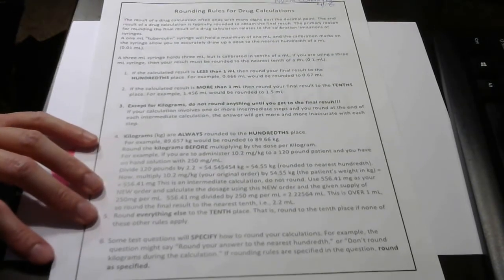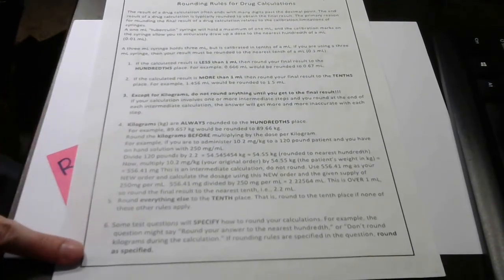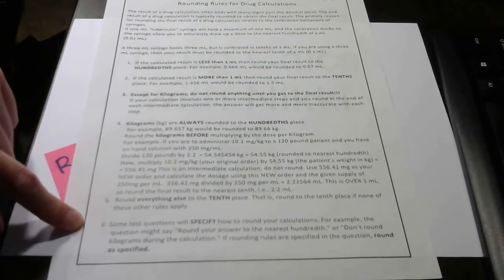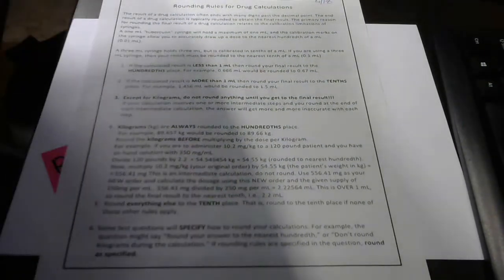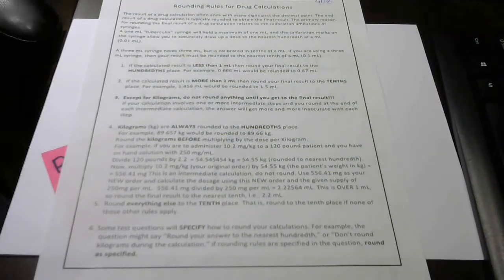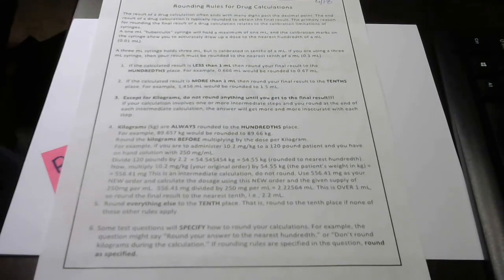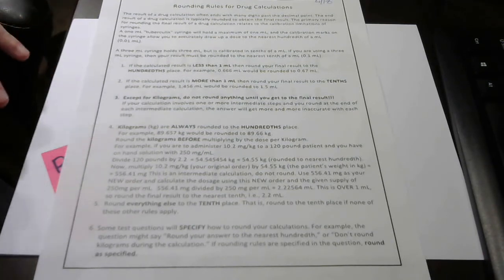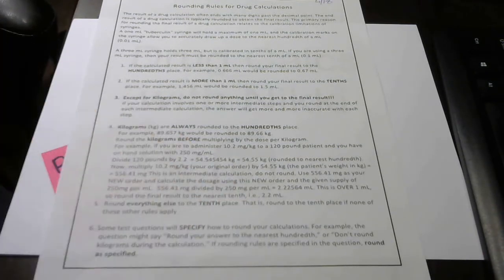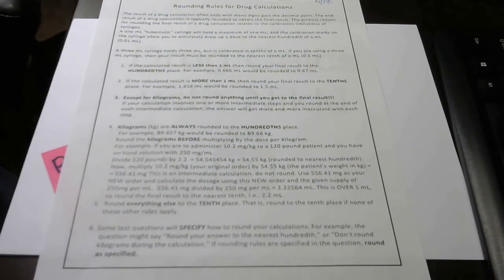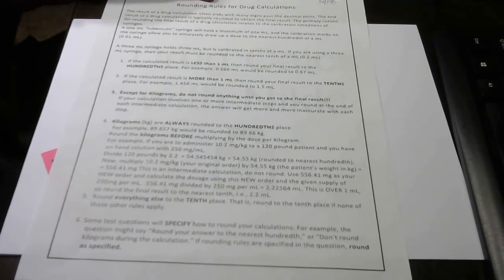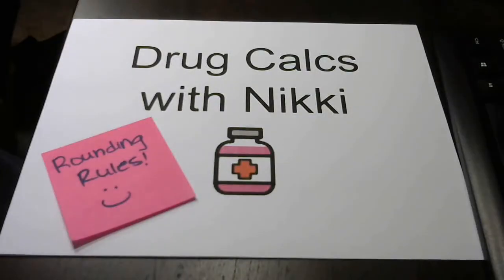Some test questions will specify how to round your calculations, so make sure you're reading the questions carefully on worksheets and tests. I think it's a good idea to use a highlighter to mark important information so you're not missing anything. If you see something that says to round to a specific place, make sure you highlight that so you can put down the correct answer. And I think that is all for rounding rules.